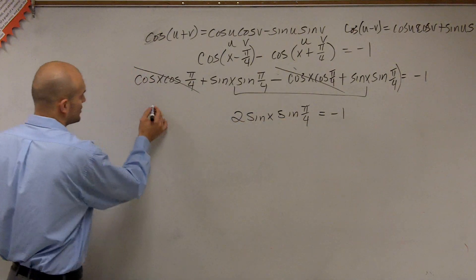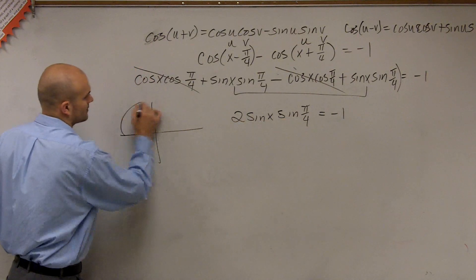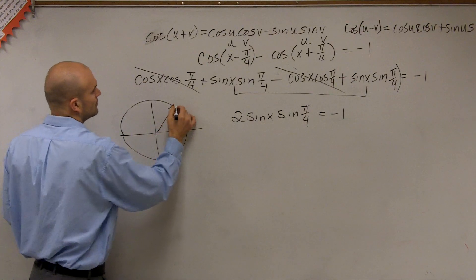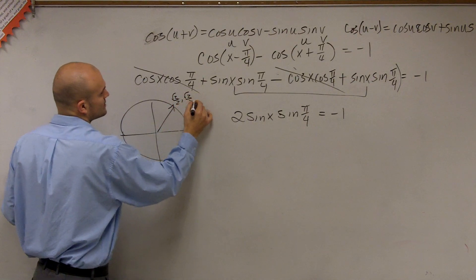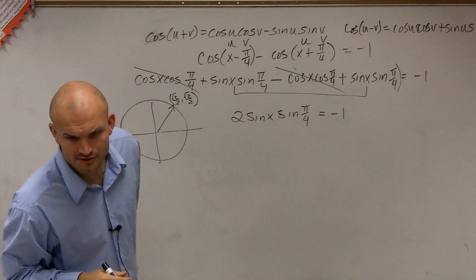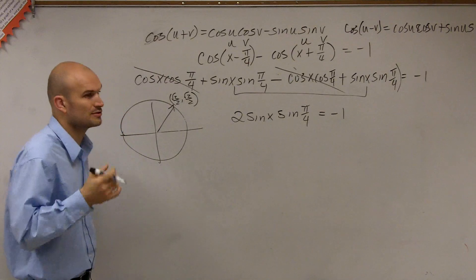So the sine of pi over 4, we go to our unit circle. Pi over 4 is right here, which is square root of 2 over 2, comma, square root of 2 over 2. And this actually says, find all the solutions? OK. Now, find the solutions between 0 and 2 pi.